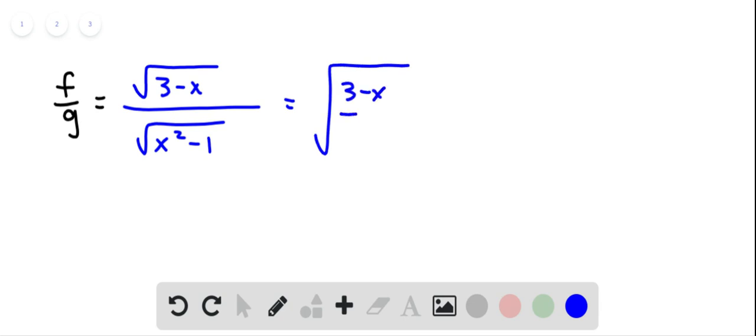We could write those inside a single square root if we want to. And I suppose if we're really interested, we could rationalize the denominator, but typically in calculus you're not required to do that. So we'll call this f over g.